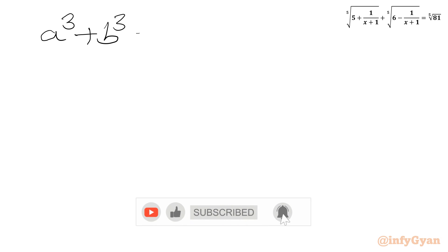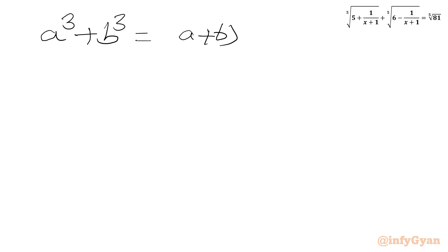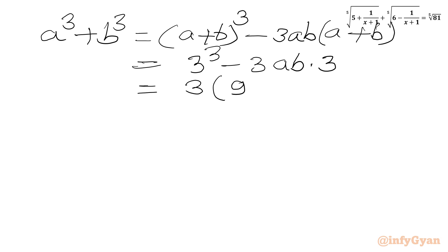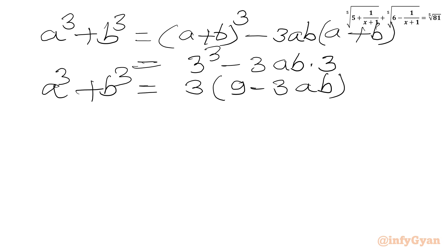Now I will use the algebraic formula for a^3 + b^3, which equals (a + b)^3 minus 3ab(a + b). Since a + b = 3, I write 3^3 minus 3ab times 3. Taking 3 common: 3 times (9 minus 3ab). So a^3 + b^3 = 3(9 - 3ab). Let us call this equation number 3.